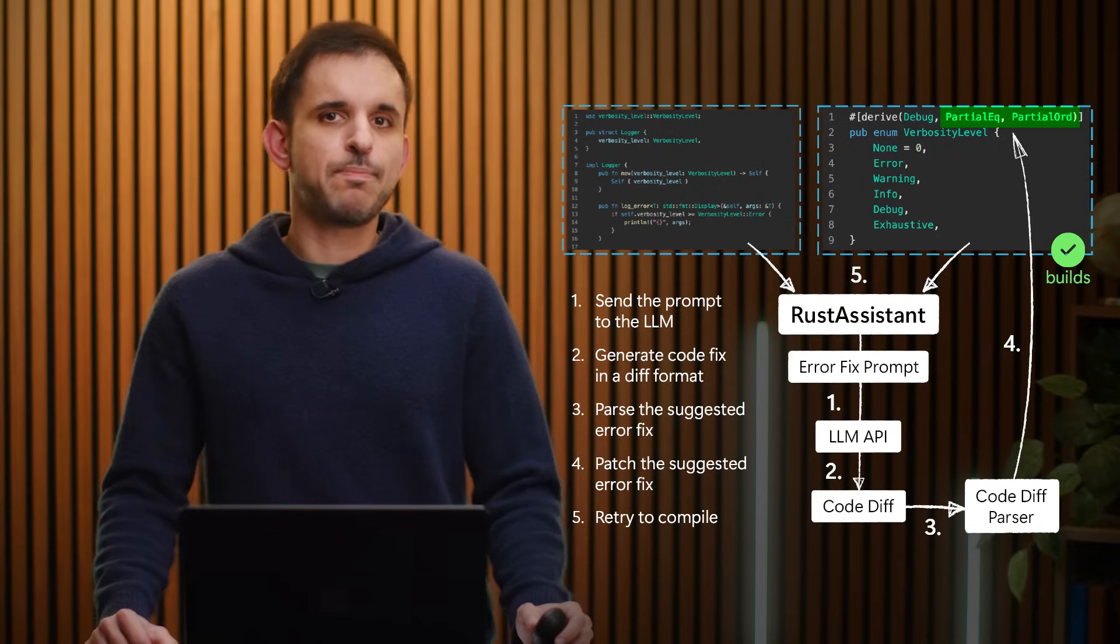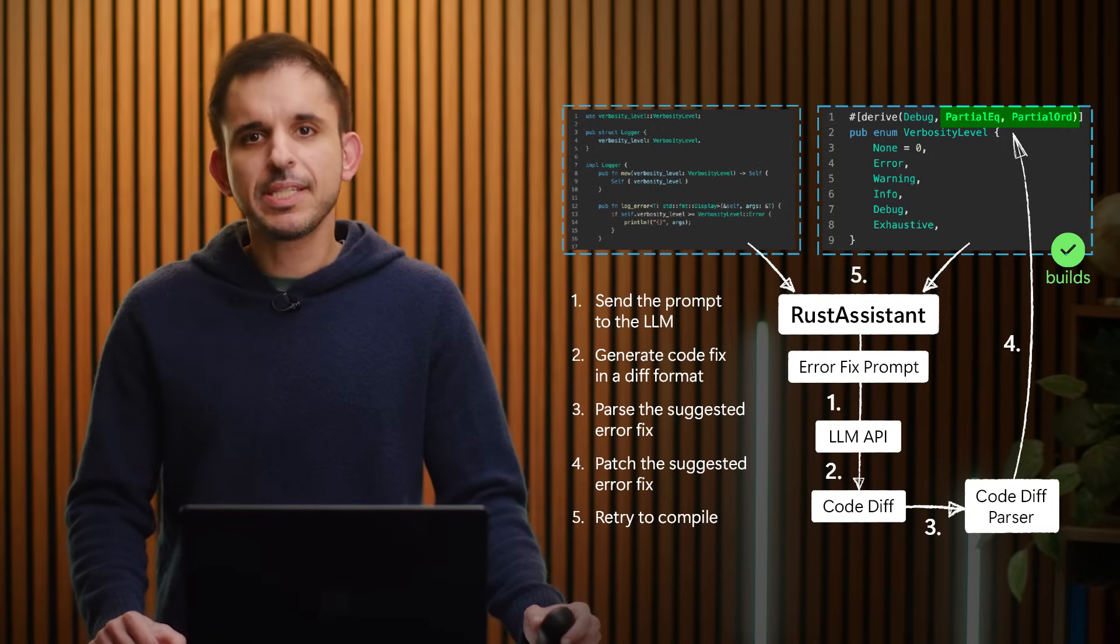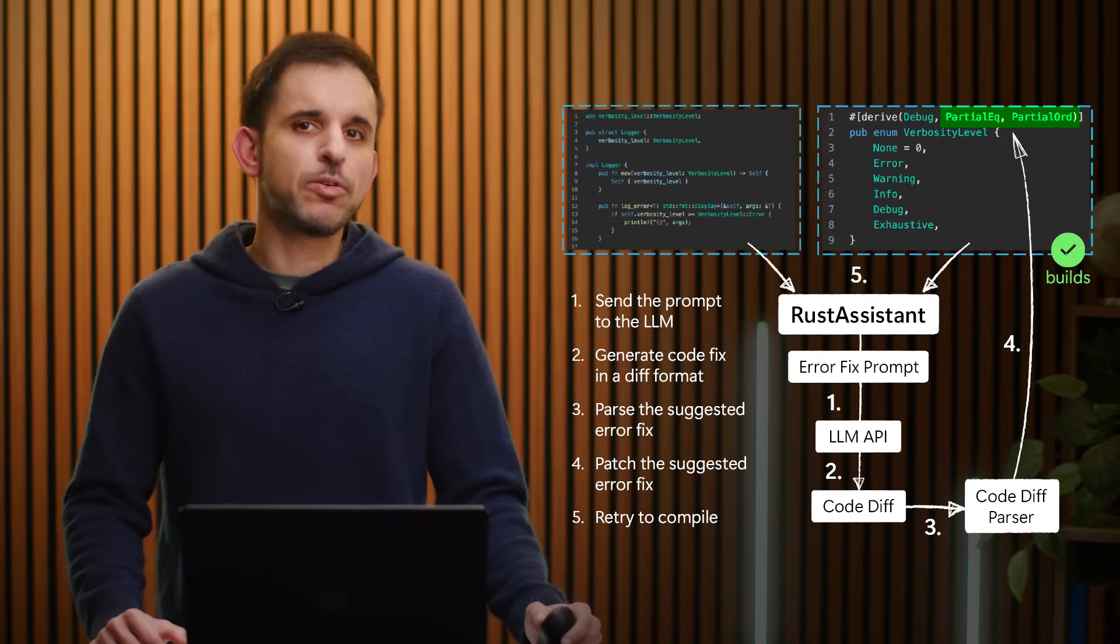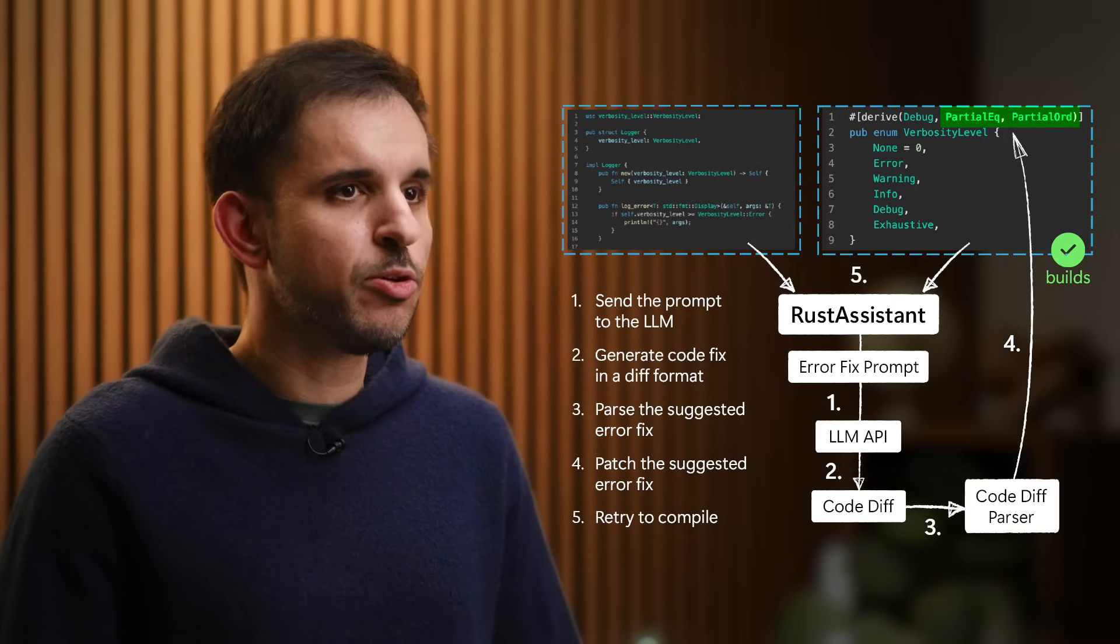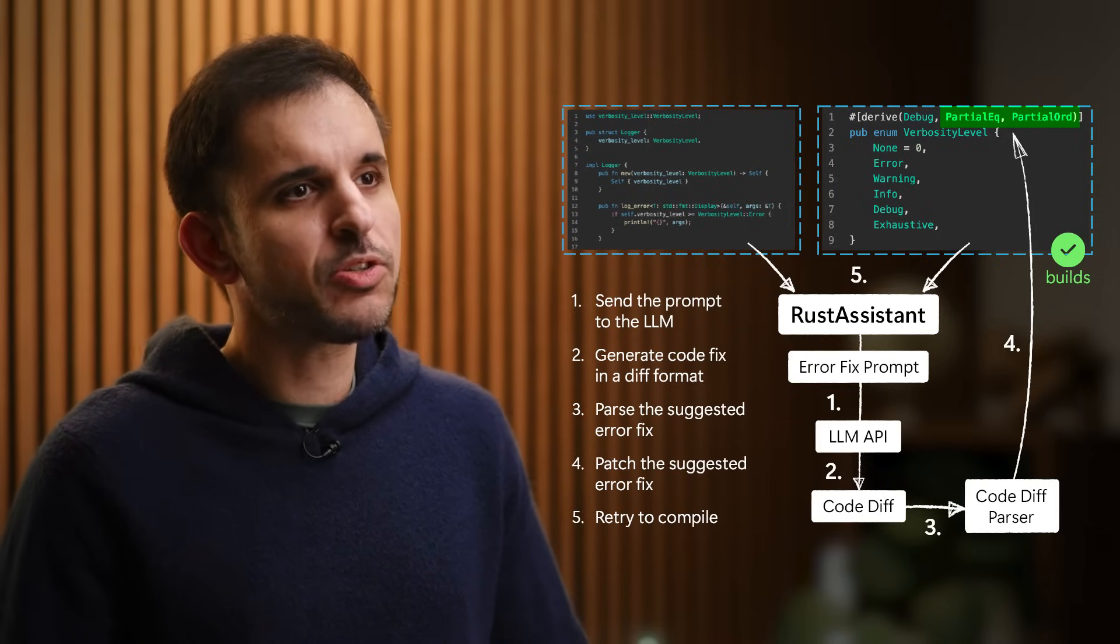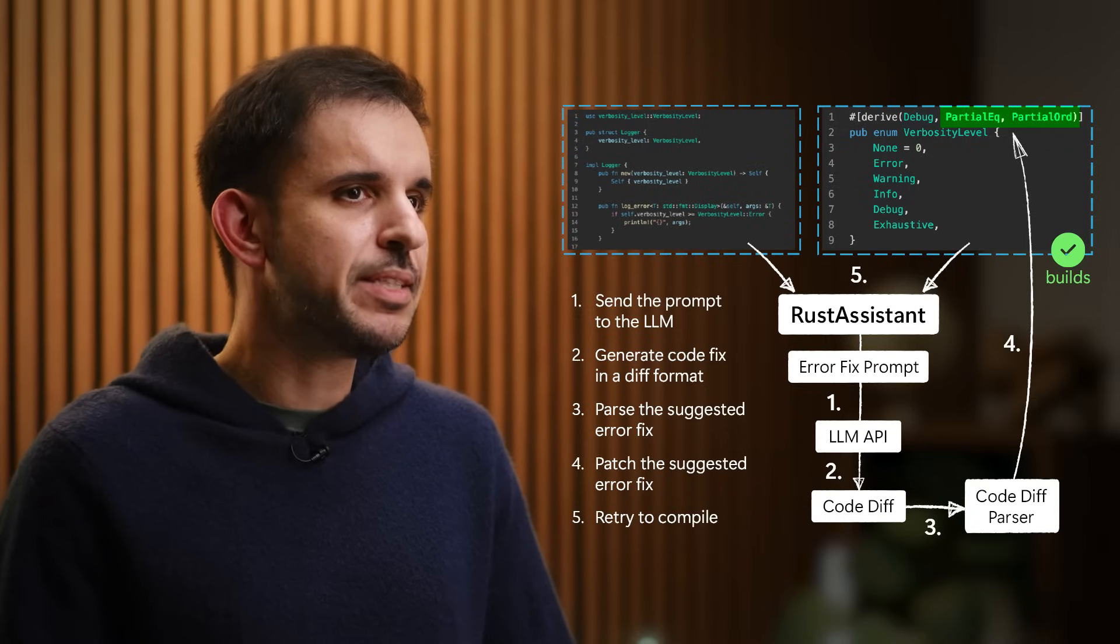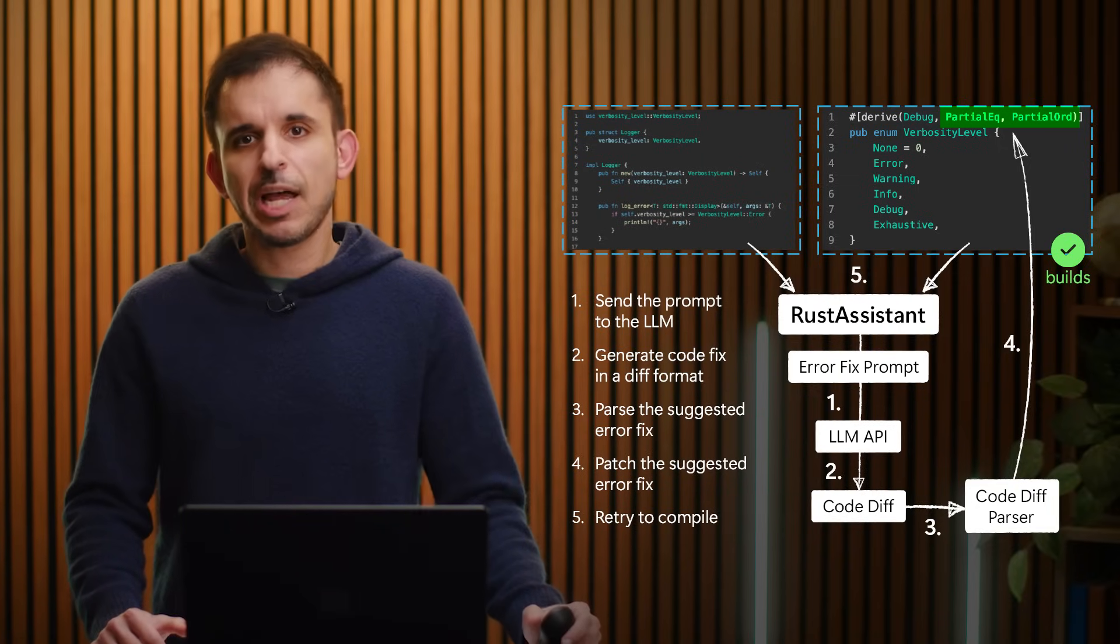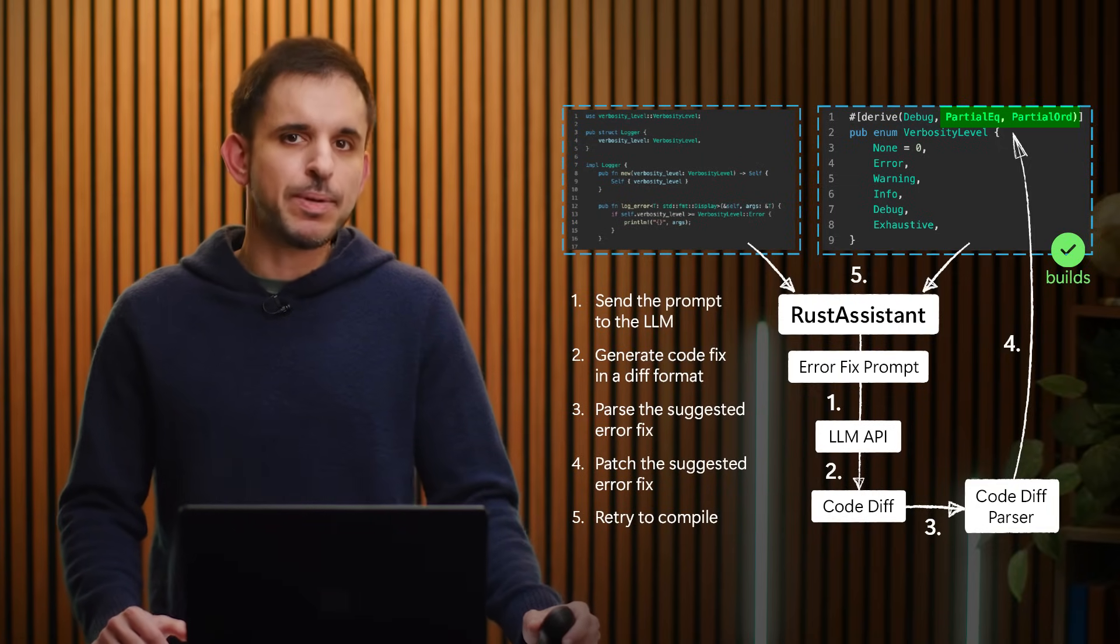Next, Rust Assistant parses this suggested fix and applies the changes to the appropriate file in the code base. Once the fixes are applied, our tool runs again the Rust compiler to verify if the build error has been resolved. If the code compiles, then great news! The process is now complete and we can do further validations like running any unit tests. However, if new errors appear or if the fix doesn't fully resolve the issue, Rust Assistant sends the updated context back to the LLM, iterating until the code compiles error-free. And this iterative process allows our tool to handle complex multi-step fixes while ensuring correctness and alignment with the developer's intent.